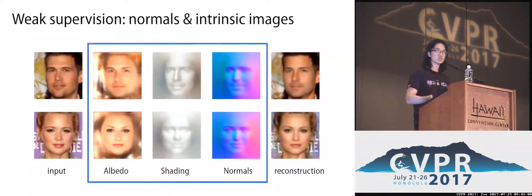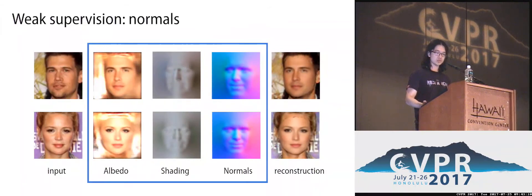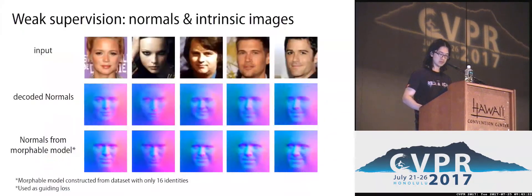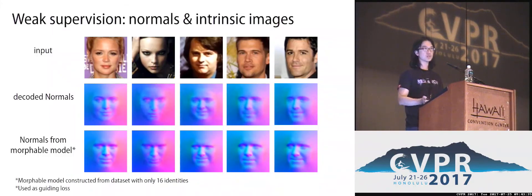After the introduction of these intrinsic image guiding losses, the intermediate results of albedo, shading, and normals improve significantly. Compared to the previous results where only morphable model normals were used, after applying weak supervision via intrinsic images, most illumination information has been removed from the albedo image. Furthermore, the normal map estimation now captures the subject's identity much more closely.